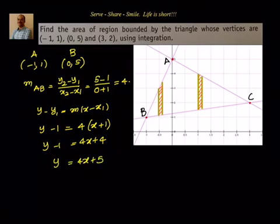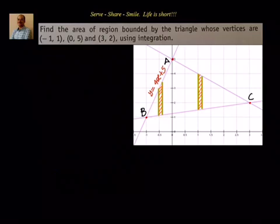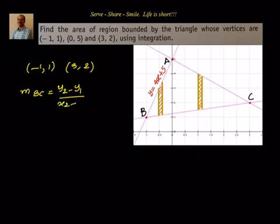So the equation of AB is y = 4x + 5. Now let's find the equation of BC. B is (-1, 1) and C is (3, 2). The slope m of BC equals (2 - 1)/(3 - (-1)) = 1/4.